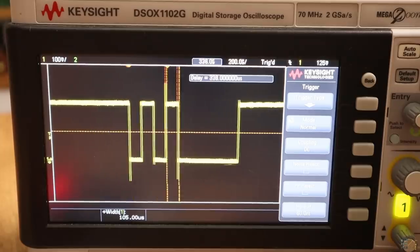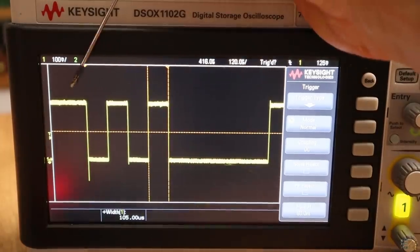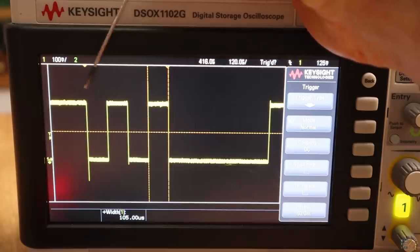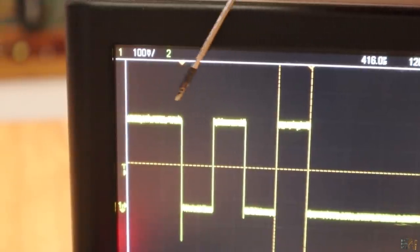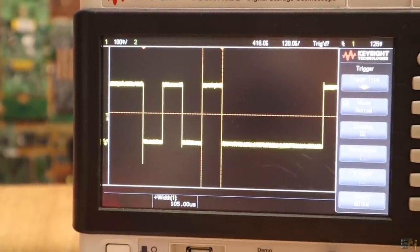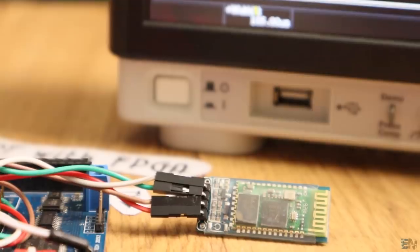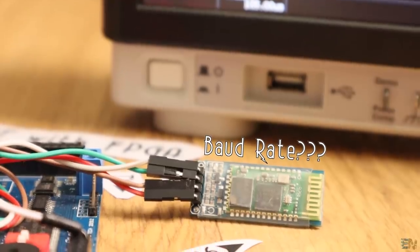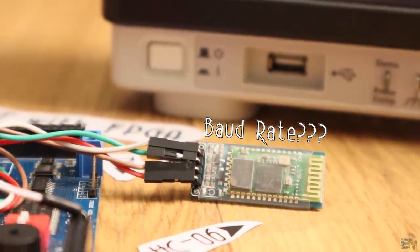As you can see this signal is always high and it will only be low when we receive data. So it is very easy to detect the start bit. Anytime we detect a falling edge, we start receiving data. But when do we get the first bit? How do we know when to start counting bits? For that, we must know the baud rate of the communication and also the amount of bits that we send.